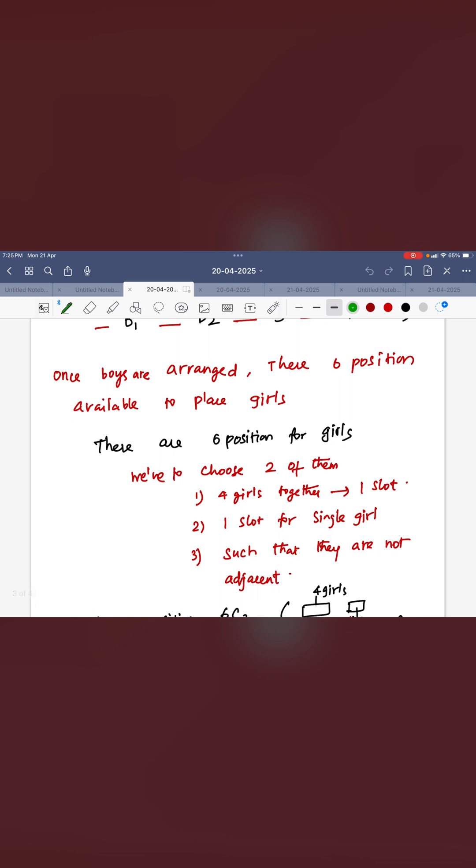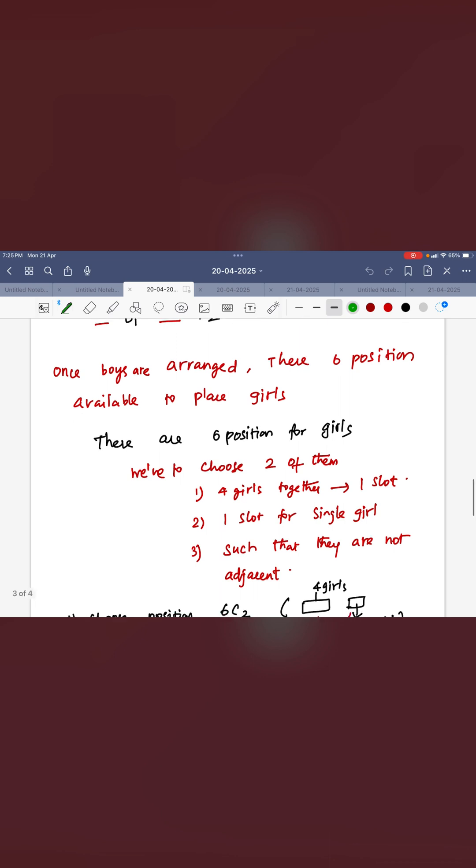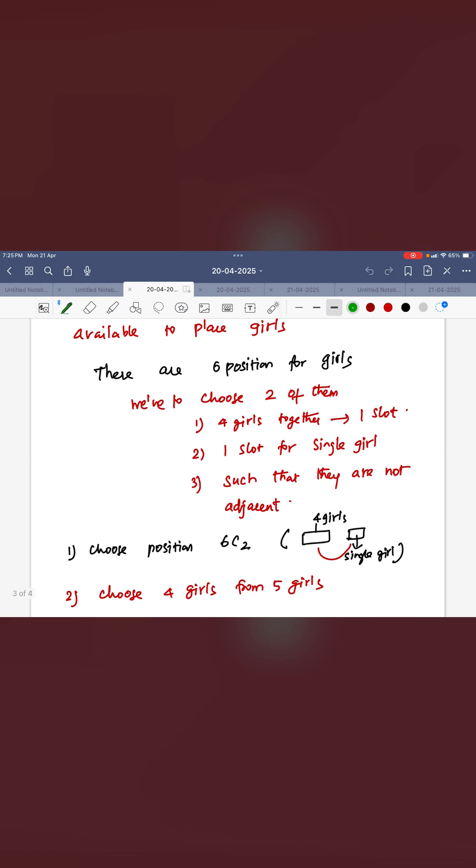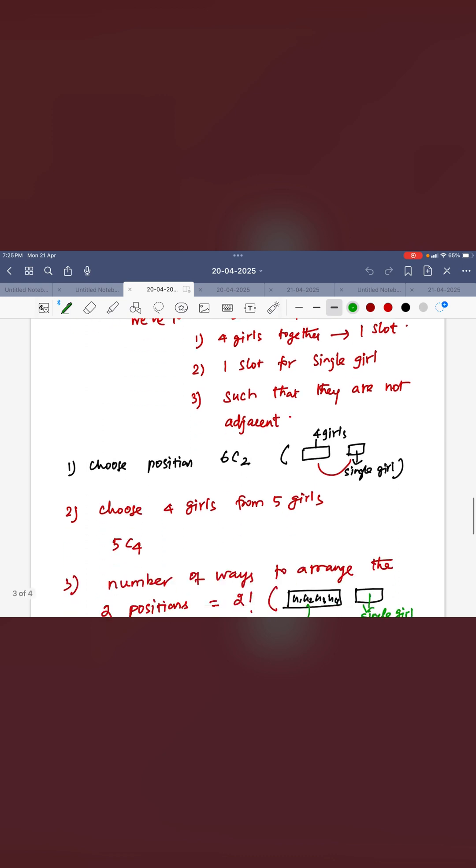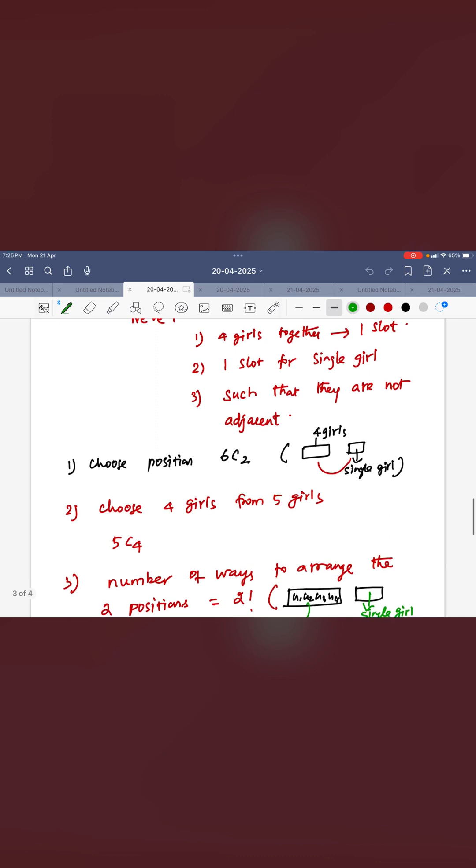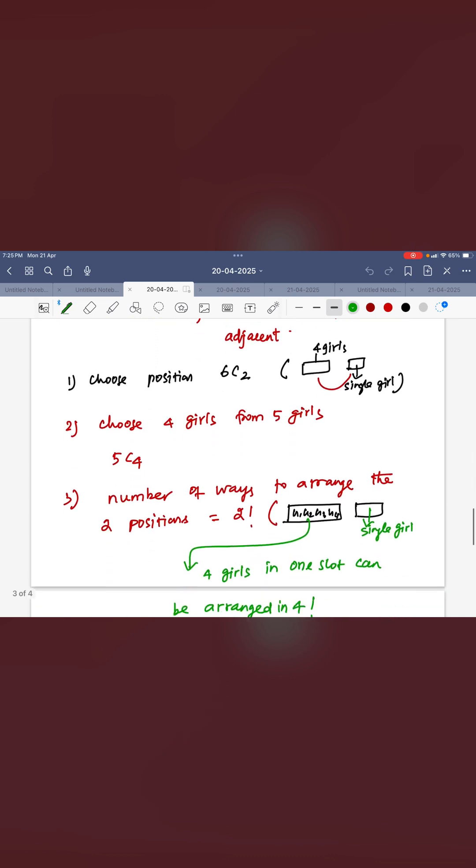So you can see you have to take 2 positions. 1 position for 4 girls together, 1 position for 1 single girl. So first what you can do? 2 positions you have to select from 6, 6C2. Understood?